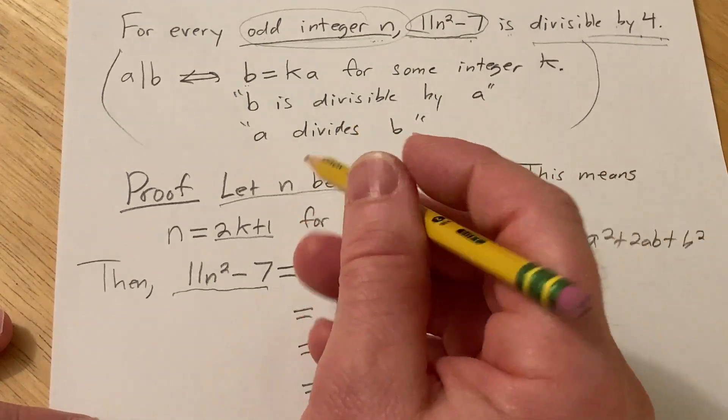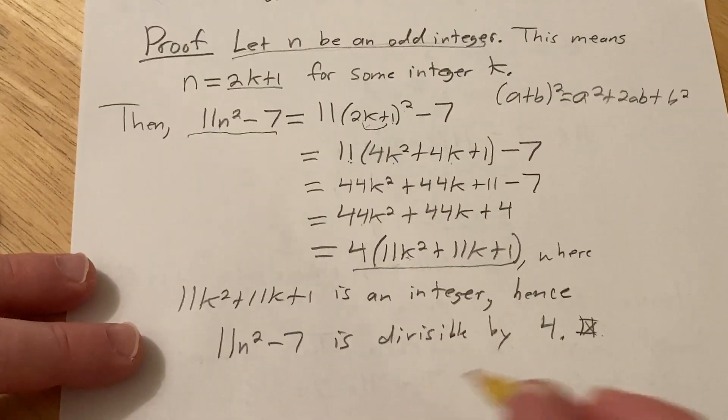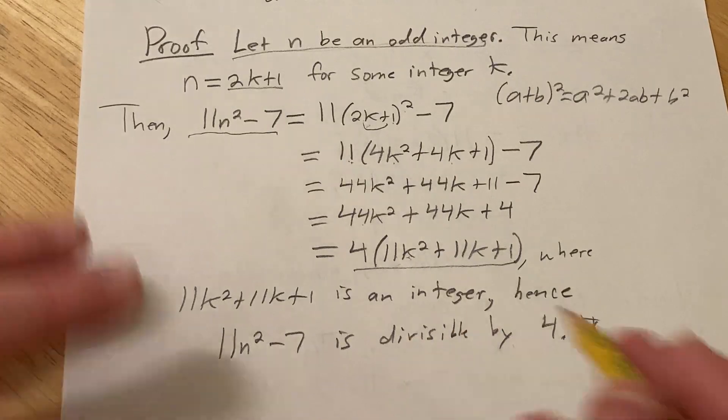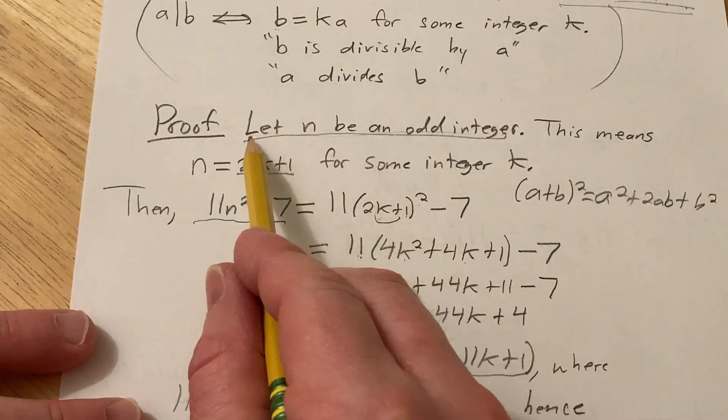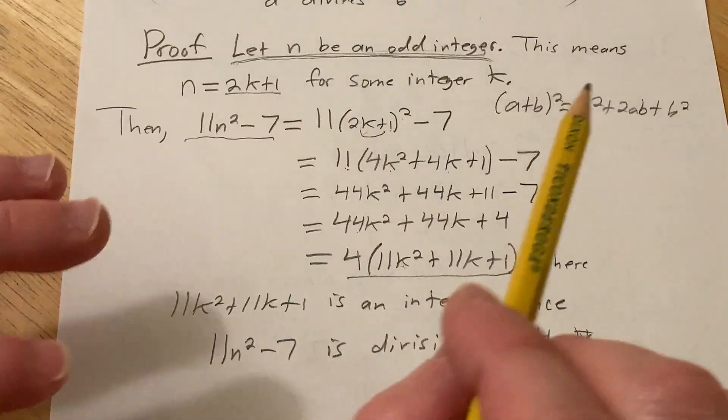Sometimes people will write, let n be an arbitrary odd integer. And then at the end, you would say, since n was arbitrary, this holds for all odd integers. But just being a little sloppy here. But it's understood that we let n be an odd integer, and this holds for all integers.